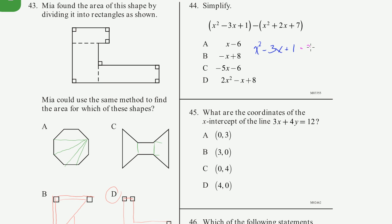Then we have to distribute this minus sign. So minus x squared, minus 2x, minus times plus 7 is minus 7. You have an x squared minus an x squared, they cancel out. Then you have minus 3x minus 2x, so minus 5x. And then you have 1 minus 7, which is minus 6. So you're left with minus 5x minus 6, which is choice C.